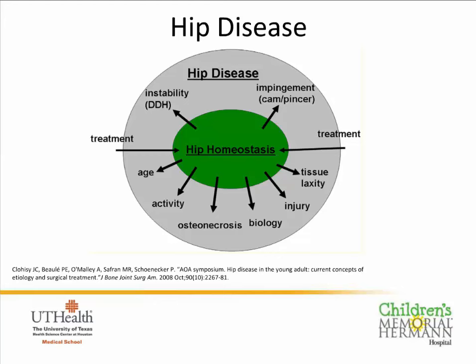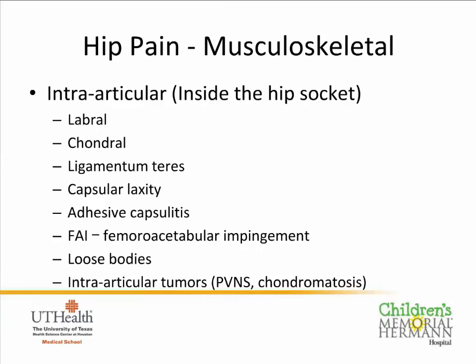I'm going to focus on the musculoskeletal causes of hip pain, starting inside the hip socket. Some buzz terms you may have heard are the labrum or cartilage. There can also be the ligamentum teres, which helps attach the femoral head deep into the socket. You can have pain from the capsule being loose — for ballet dancers and other patients needing range of motion, it's a fine balance between having enough motion for sport without having so much that it causes pain. There can also be tightness, or FAI — femoroacetabular impingement.